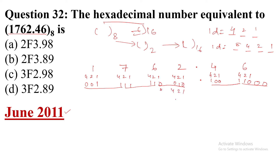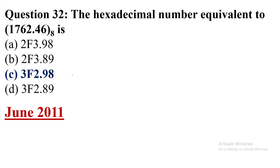For each group of 4 bits: a group with bits in the 2-place gives 2; a group with all four places gives 8+4+2+1=15, which is F in hexadecimal. Computing all groups gives us 3F2.98 in hexadecimal. Checking the options, option C — 3F2.98 — is the correct answer. Thank you very much for watching.